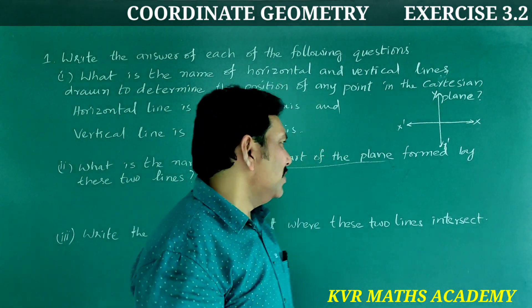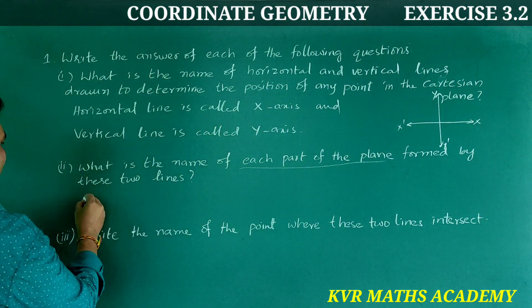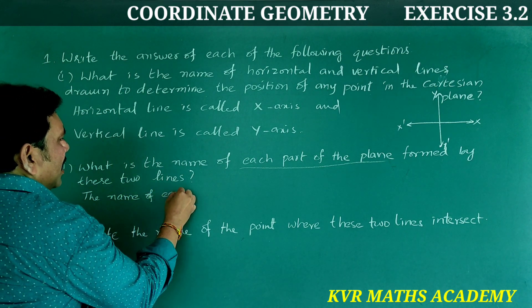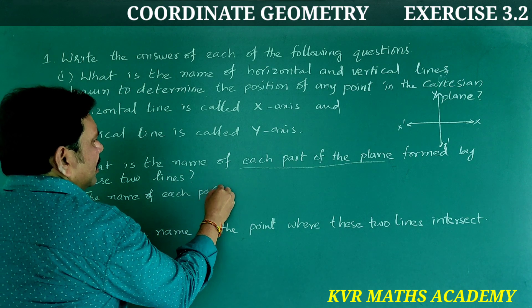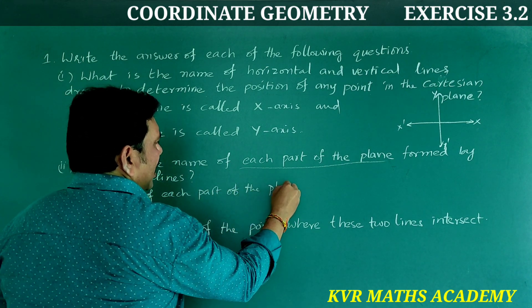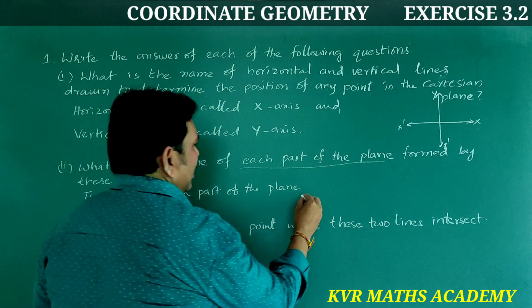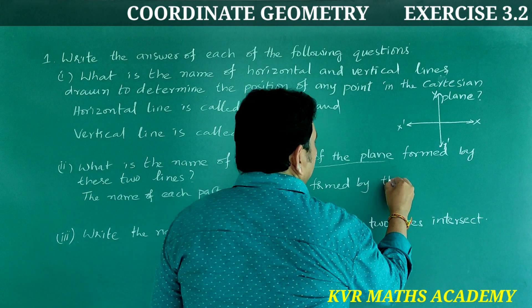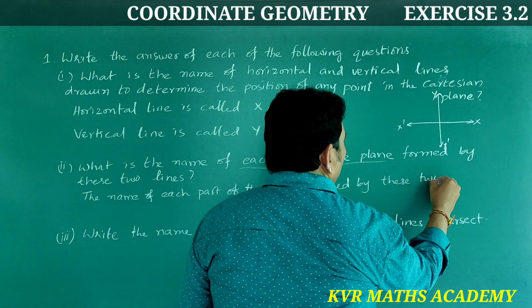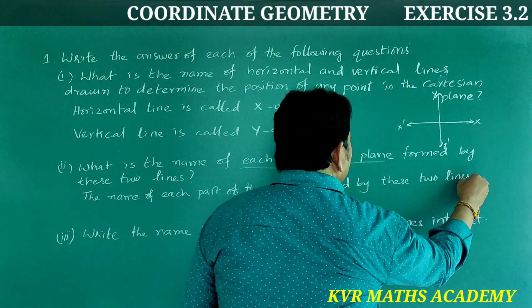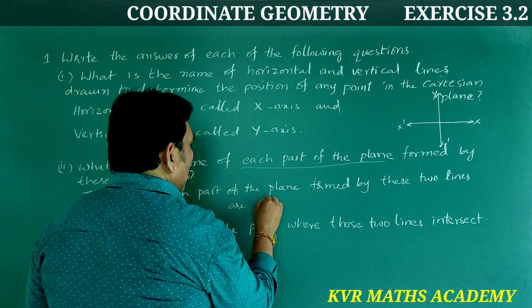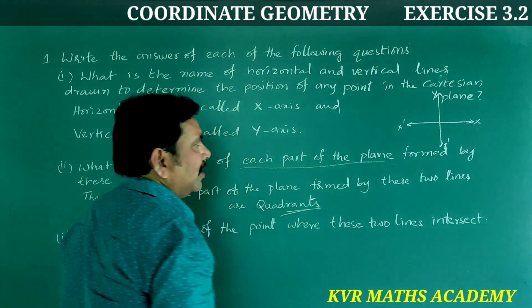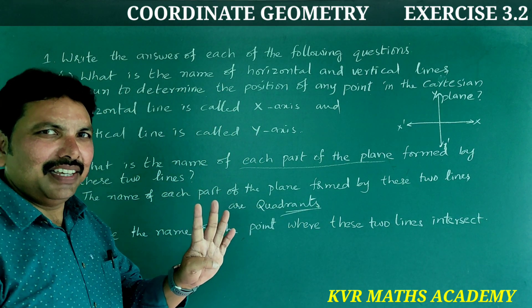The name of each part of the plane formed by these two lines are quadrants. How many quadrants have formed totally? Four quadrants.